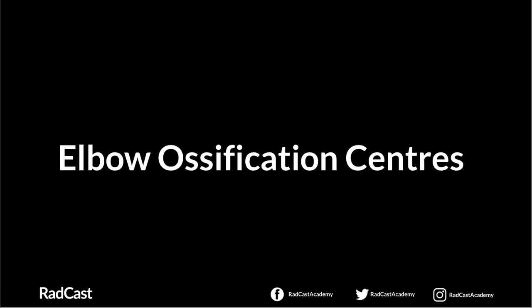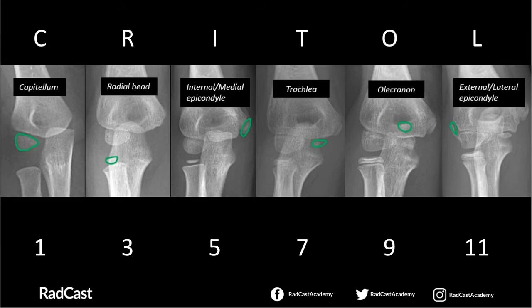Let's start with the elbow ossification centres. The key fundamental step is the mnemonic known as CRITOL. Some centres use CRITOE with an E at the end instead of an L. But fundamentally, C stands for capitellum, R for radial head, I for internal or medial epicondyle, T for trochlea, O for olecranon, and L for lateral epicondyle — or if you use CRITOE, E is for external epicondyle.